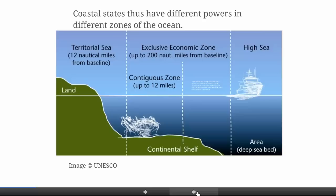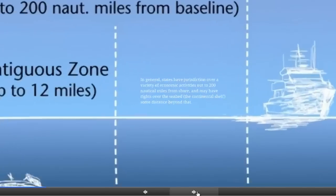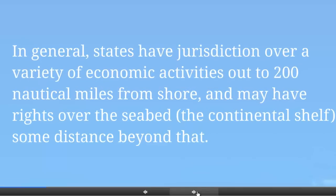Beneath that we have the continental shelf, the natural prolongation of the state's land mass, over which the coastal state also has rights. Then we have the areas beyond national jurisdiction: the water column, the high seas, and beneath that the deep seabed — what's known in international law terminology as 'the Area.' The essential point is that states generally have jurisdiction over a variety of economic activities out to 200 nautical miles from shore, and may have rights over the seabed and continental shelf some distance beyond even that.